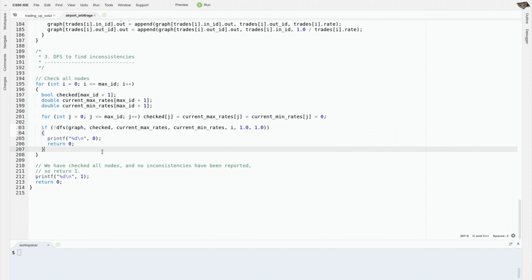Now we do our depth first search on each node. We start at each node, initialize an empty array saying that we haven't checked anything yet, initialize arrays with all of the least and most amounts of money that we can get at each node, and then start the depth first search with these empty arrays starting at our given node, saying that we can start with one of that currency. If the DFS reports an inconsistency, in other words, it returns false, then we'll immediately say that this is inconsistent and stop. Otherwise we'll continue the loop until it's done.